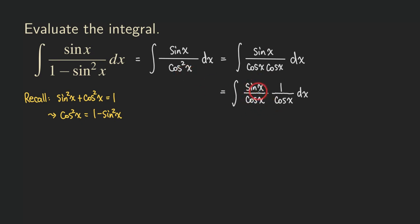So in this case, we can turn the sine x over cosine x into tangent. And then the reciprocal of cosine x, 1 over cosine x, is being turned into secant. So let's do that.